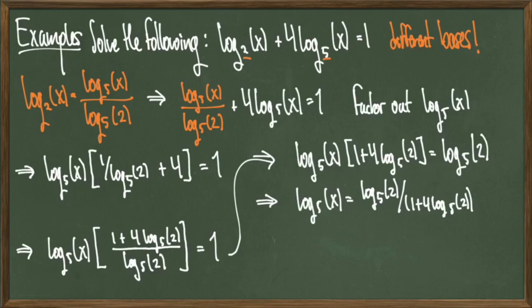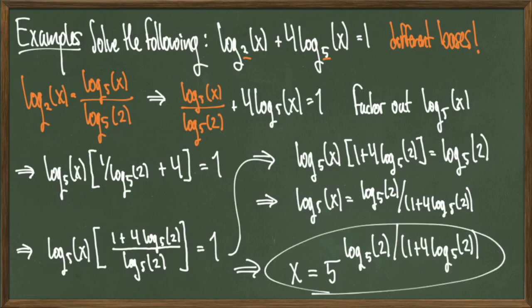Since I'm dealing with log base 5, I would then lift both sides by the number 5, and the cancellation that occurs afterwards on the left hand side would leave me with x = 5^(log₅(2)/(1 + 4log₅(2))), and we're done.